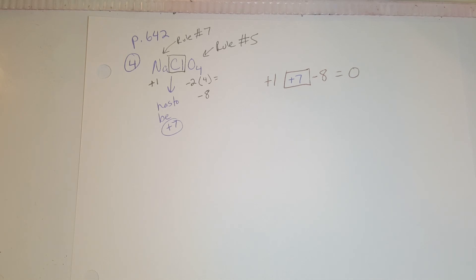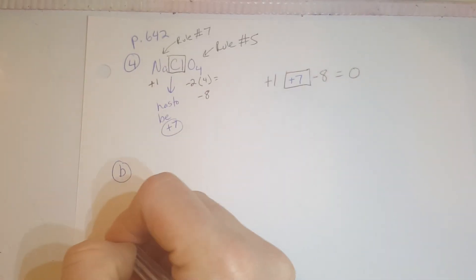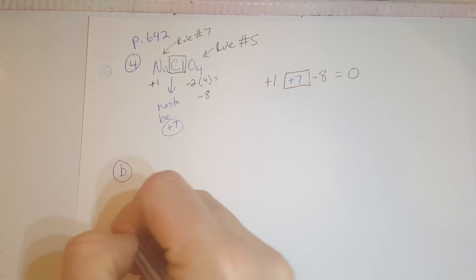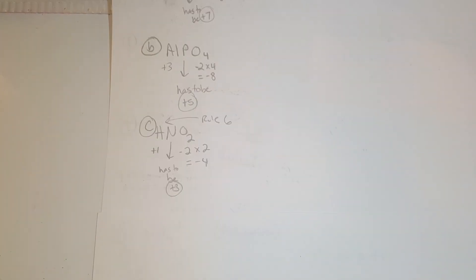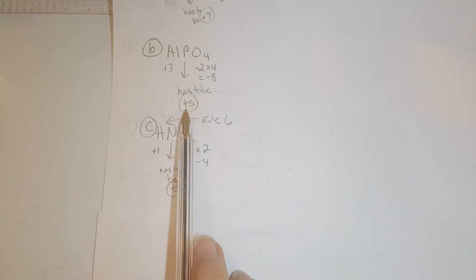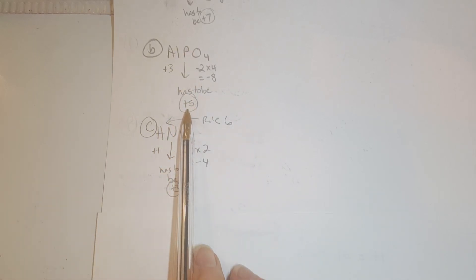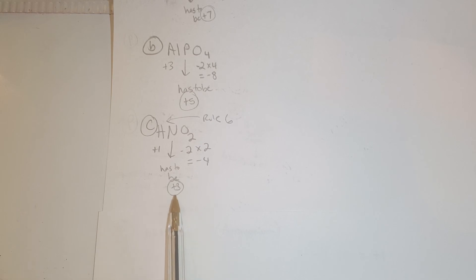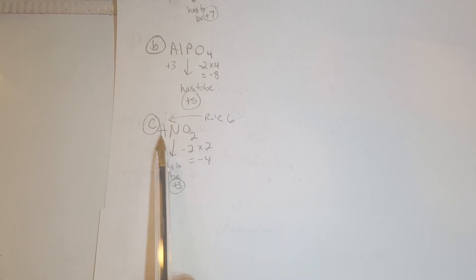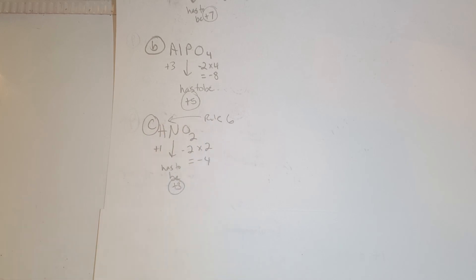Chlorine has an oxidation state of plus seven. Pause the video and try parts B and C. For part B, phosphorus has to be a positive five. For part C, nitrogen has to be a positive three. We haven't talked about hydrogen yet, but it has its own rule — rule six — so if you were confused, refer back to rule six.